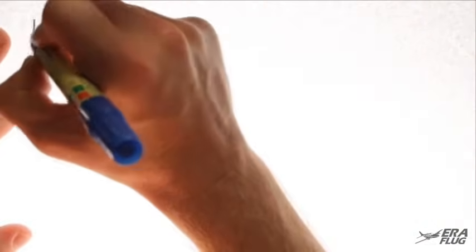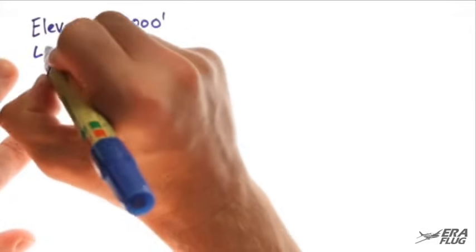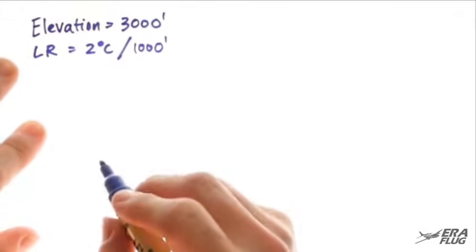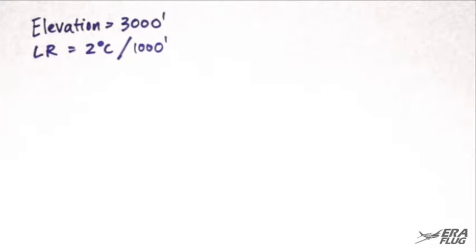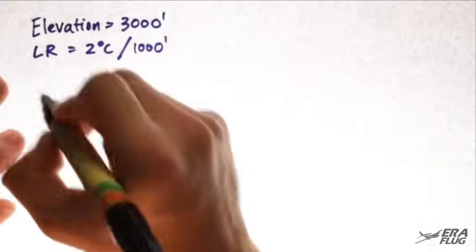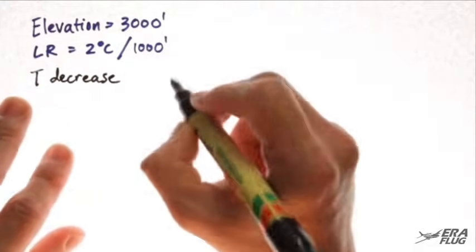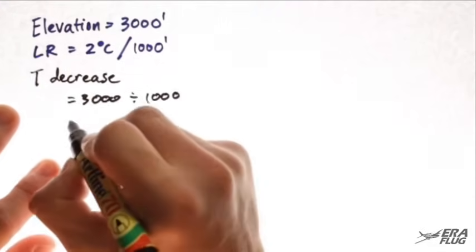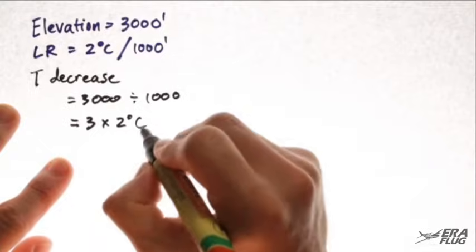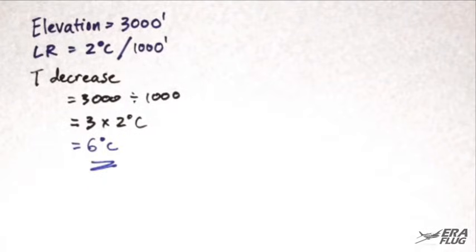In this next example, we'll introduce elevation into the calculation and use 3,000 feet. Our lapse rate is 2 degrees C per 1,000 feet. Remember, the lapse rate is the decrease in temperature as we gain altitude. To determine our temperature decrease, we divide our elevation by the lapse rate: 3,000 feet divided by 1,000 equals 3, times 2 degrees C, giving us 6 degrees C. So the total decrease over 3,000 feet is 6 degrees.